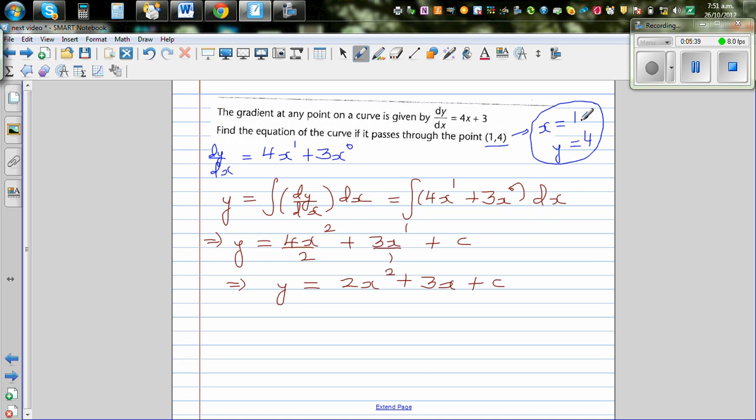So I can put when x is 1, y is 4. So 4 is equal to 2 times 1 squared is 2 plus 3 times 1 is 3 plus c. 4 is equal to 5 plus c, so taking away 5 from both sides, c is negative 1.